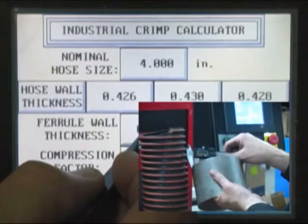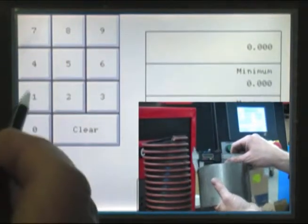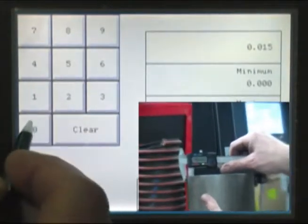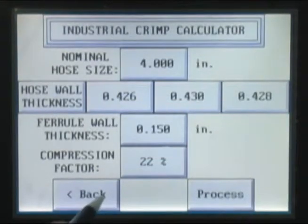Next, measure and enter the wall thickness of the hose ferrule. Finally, enter a compression factor. While this factor can vary slightly, 22% is a good starting point, and this number can be adjusted slightly if required for a particular hose and fitting combination.